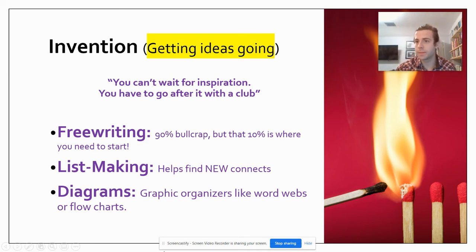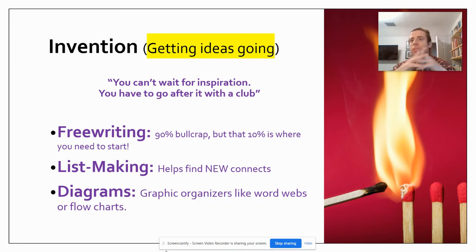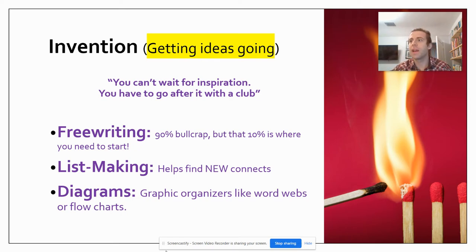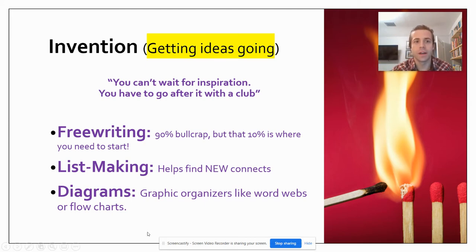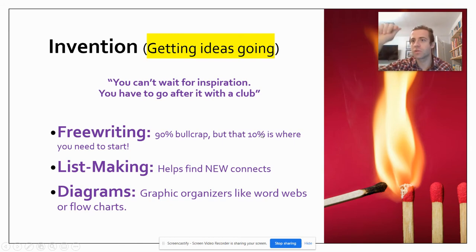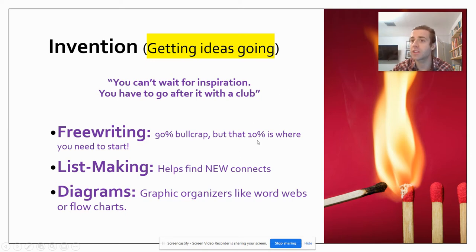So here are three things you can do to get your ideas started. First is free writing. You're going to sit down with a pencil and paper or open your Chromebook and just start typing for a set amount of time — 10 or 15 minutes. Push yourself as hard as you can and don't let your cursor or pencil stop. Write about anything and everything that comes to mind about a topic. About 90% of what you write won't be great, but you push through to find that 10% where you hit on an idea you're really passionate about.